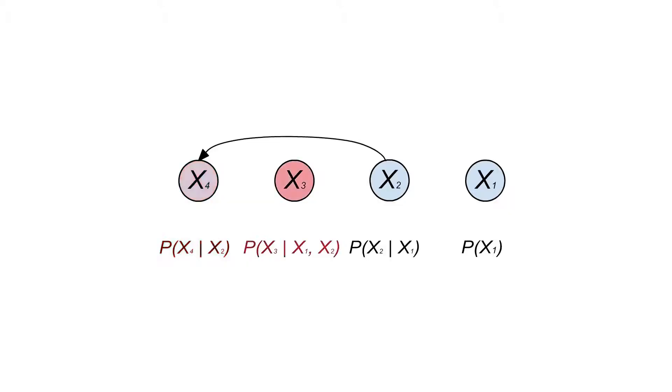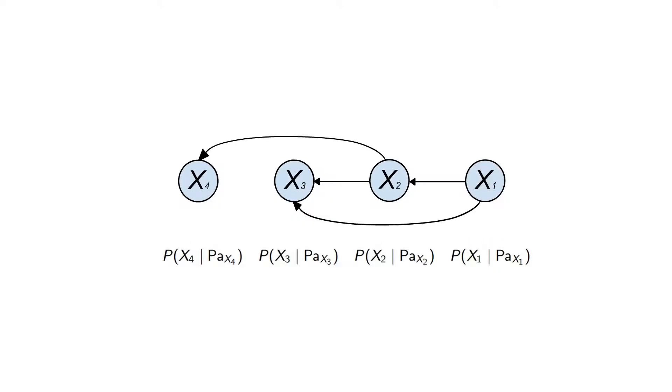Link the conditioned on variables in each term to the variable on the left of the conditioning sign. So the one on the left is the child and the ones on the right are the parents.